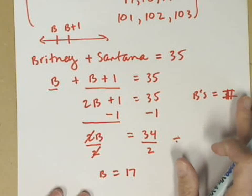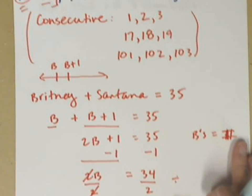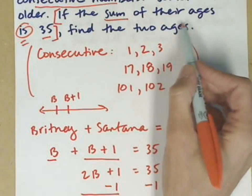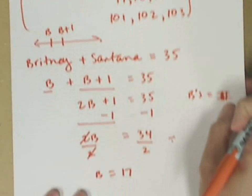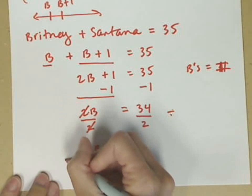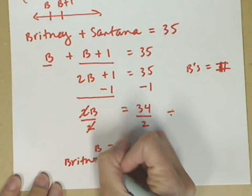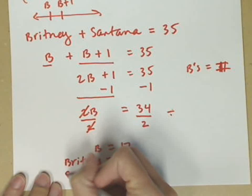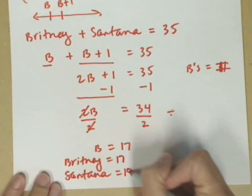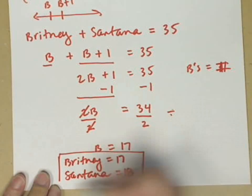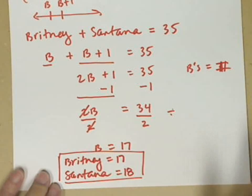But I go back up and I read the problem. So if I go back up here and read the problem, it says find the two ages. Right now I just have Brittney's age. So this tells me that Brittney is 17, Santana is 1 year older, so I can put Santana here at 18. And I'll put a box around that because now that is my answer.